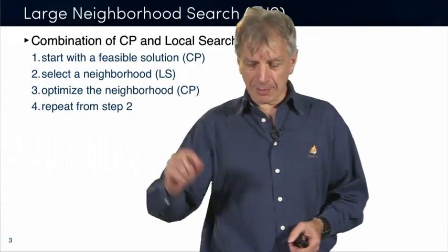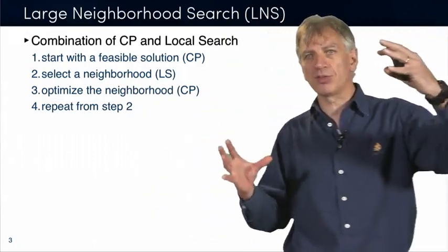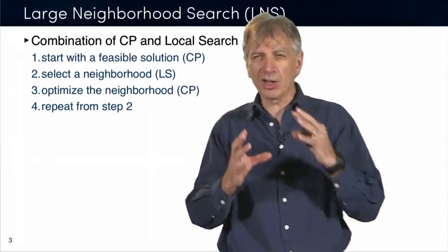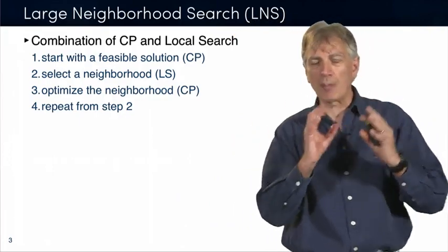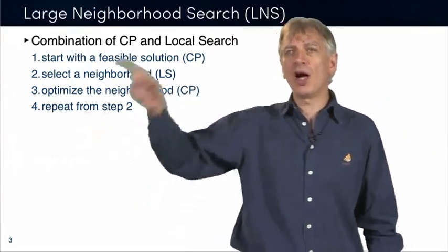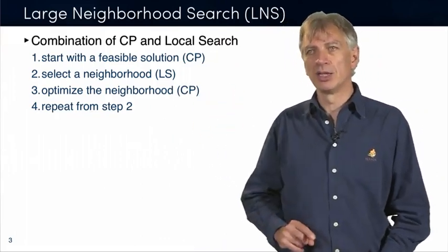Then the second step is you select a neighborhood. You take the solution that you got from CP and select a neighborhood. What you're going to see is that this neighborhood is going to be large, not a tiny neighborhood where you swap things. And then you're going to use CP itself to actually optimize that neighborhood, finding the best neighbor in that neighborhood.